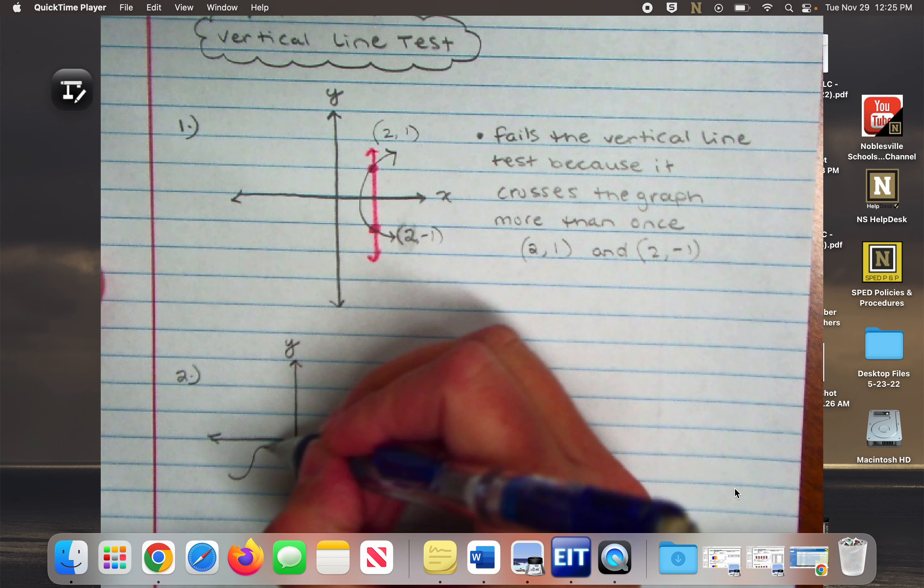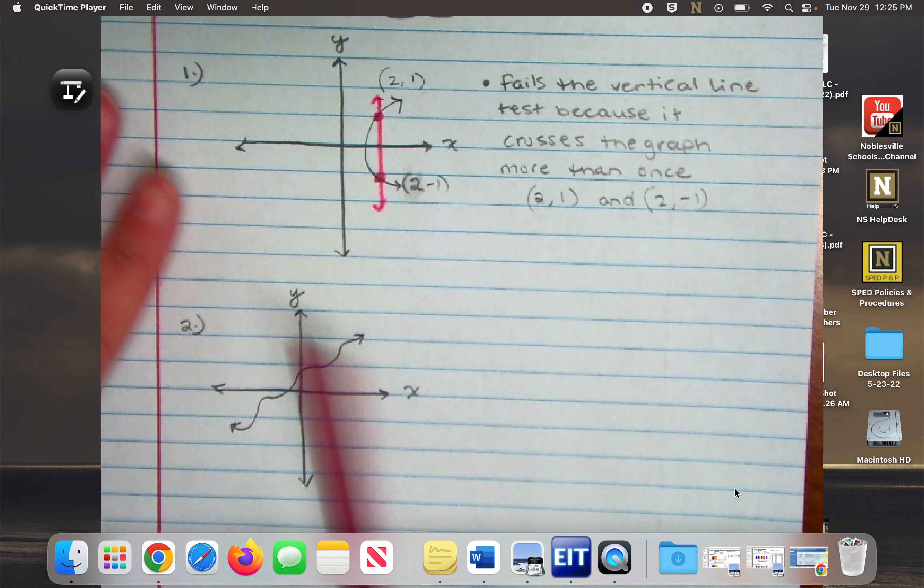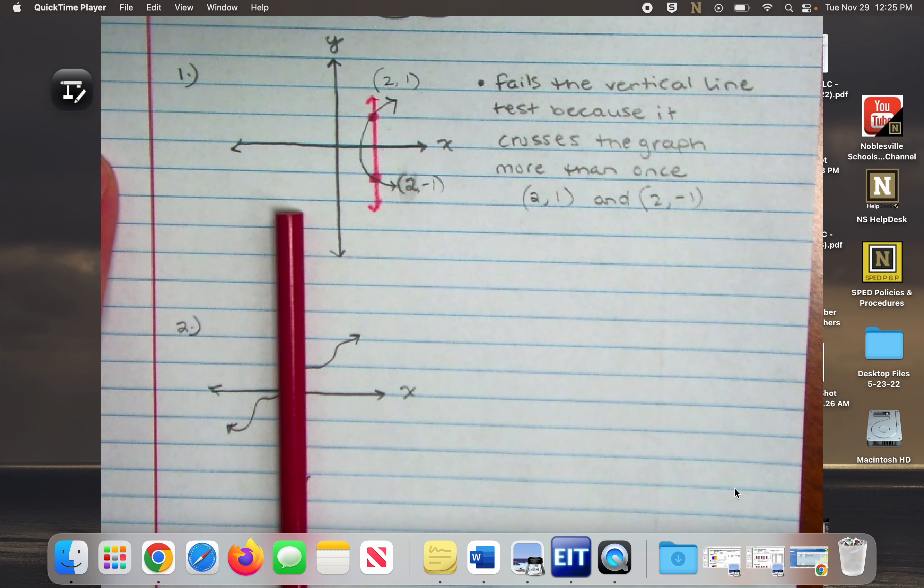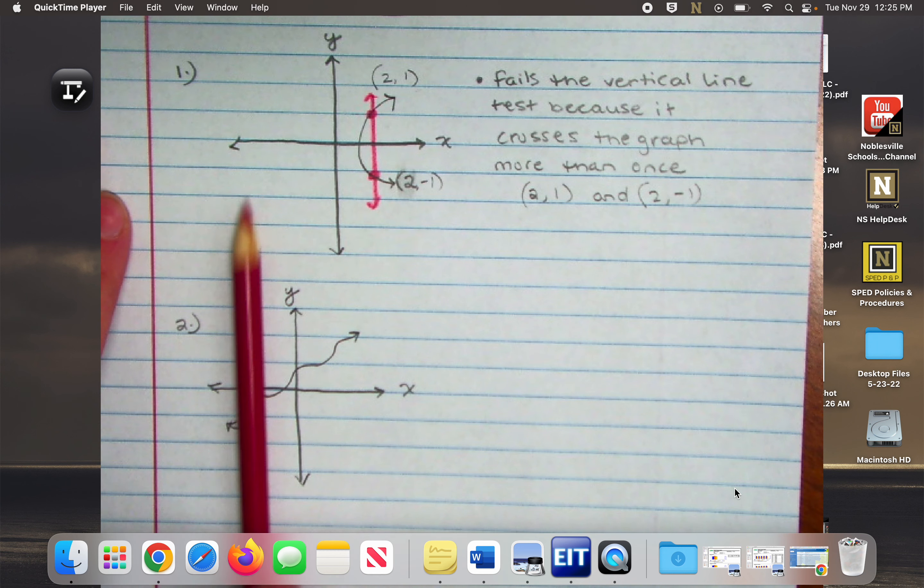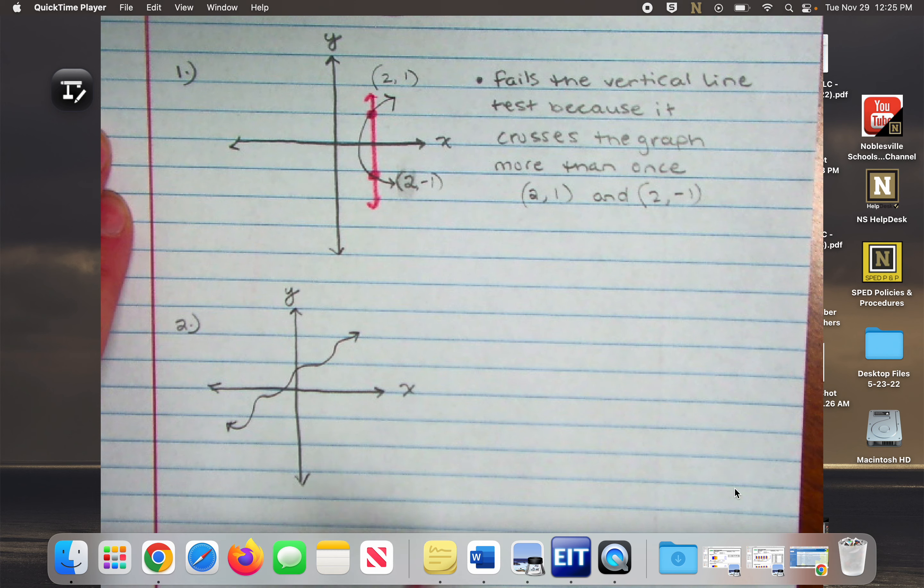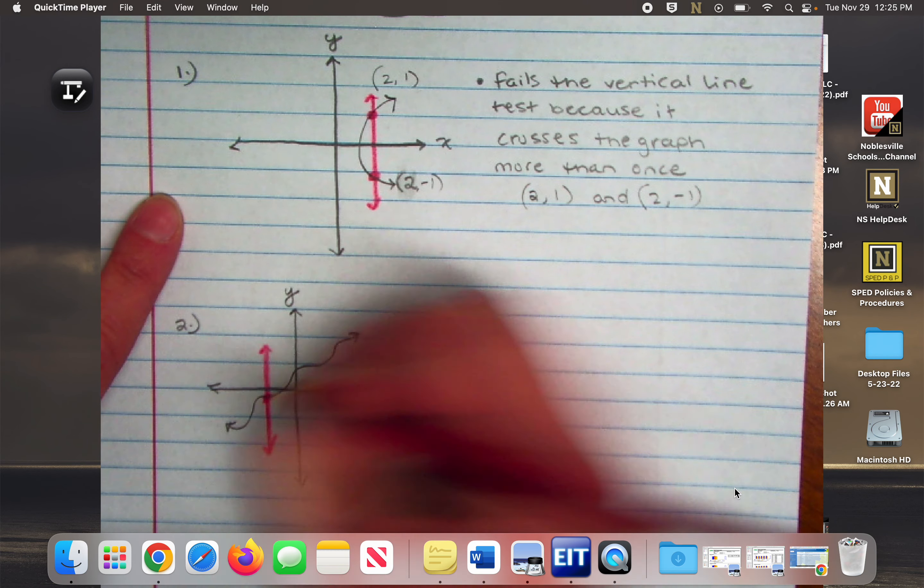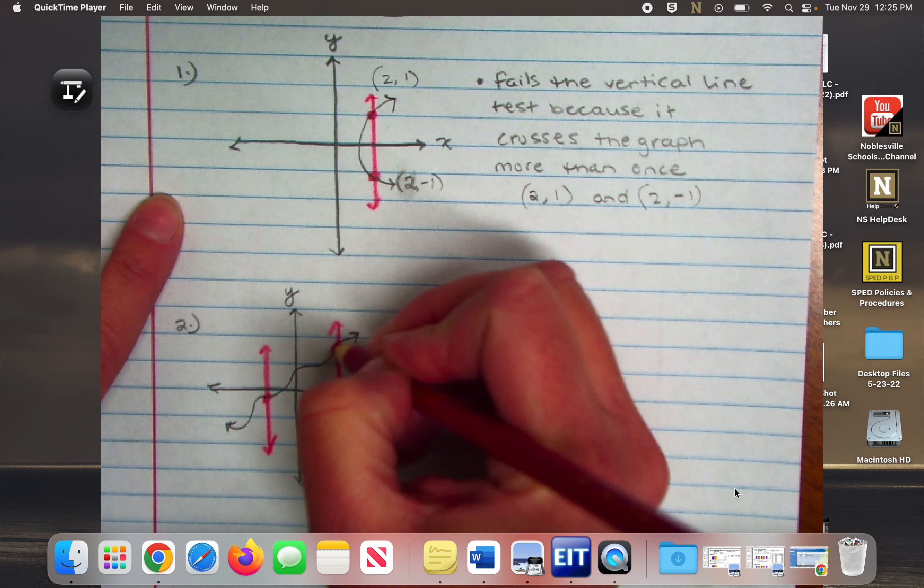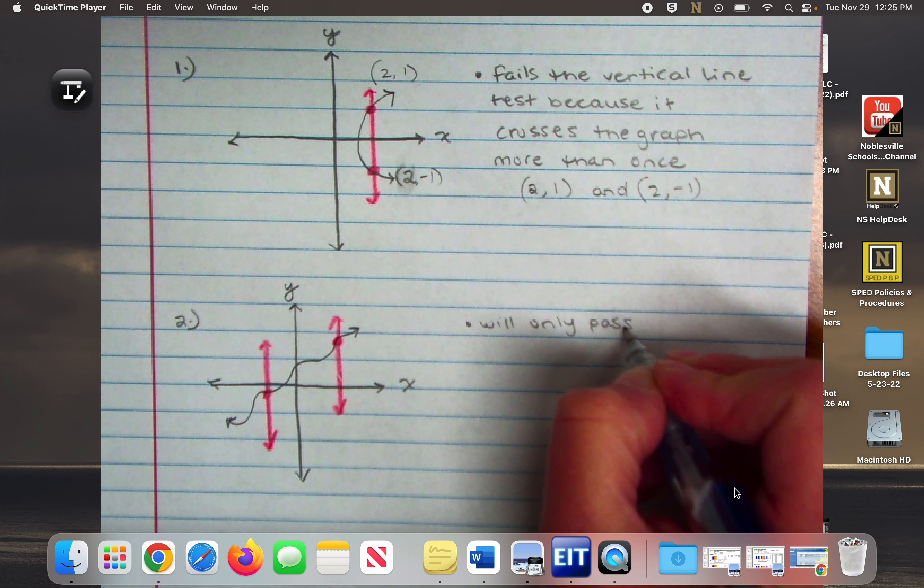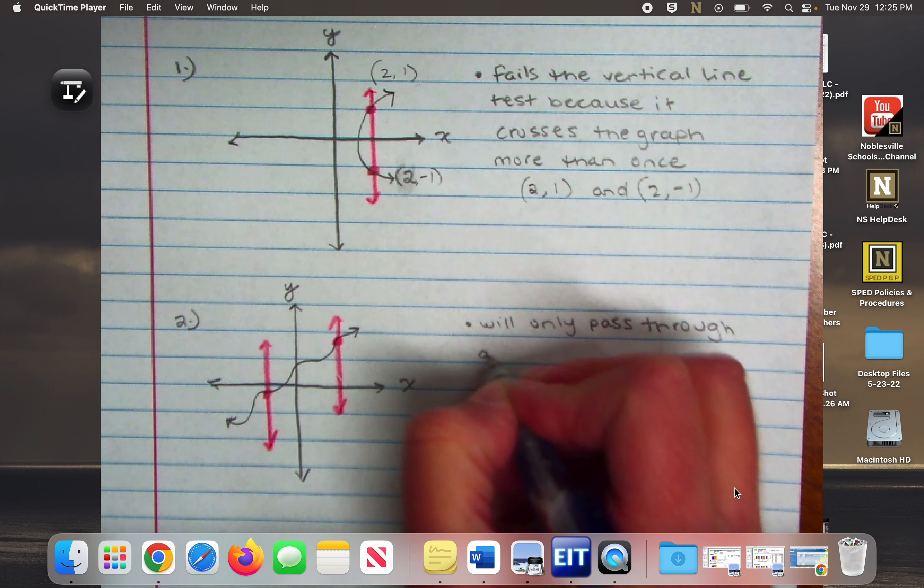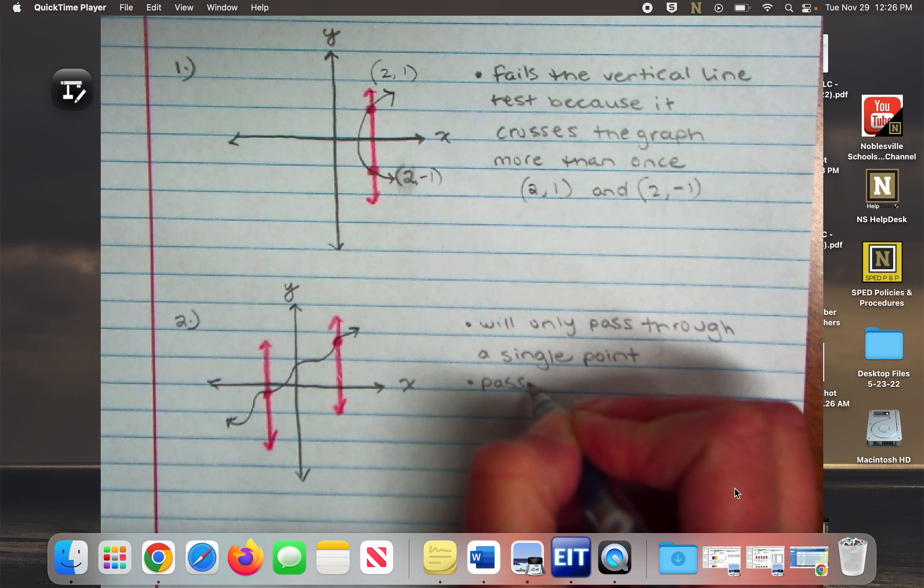So now we'll do an example where it passes the vertical line test so you have an idea of what that might look like. So if I had a graph that looked like this, just kind of some squiggles, if I take my red pencil and I make vertical lines, will it ever go through more than one? No. Nope. What's a vertical line again? North to south. So if I decided to draw my vertical line here, it's only going to go through once. If I decided to draw my vertical line here, it's still only going to go through once. So it will only pass through a single point. So it passes the vertical line test.